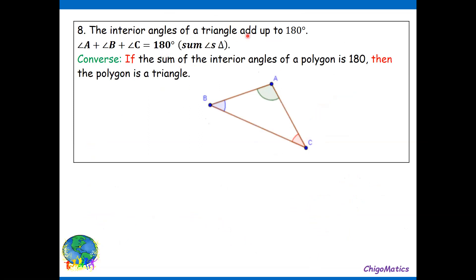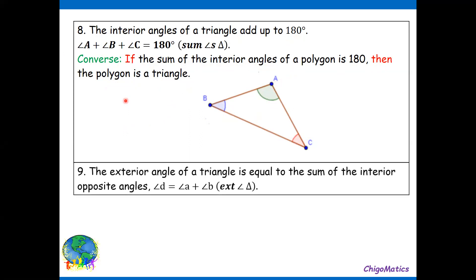Number eight, the interior angles of a triangle add up to 180. Angle B plus angle A plus angle C gives us 180, and it has its converse. If the sum of the interior angles of a polygon is 180, then the polygon is a triangle. Remember that a polygon is a shape with a straight edge, but these straight edges have to be closed.